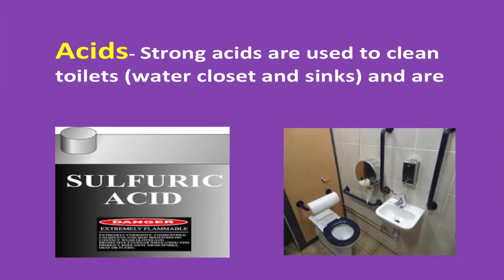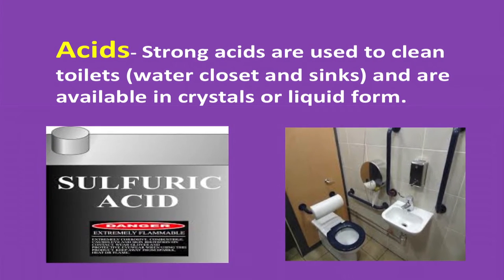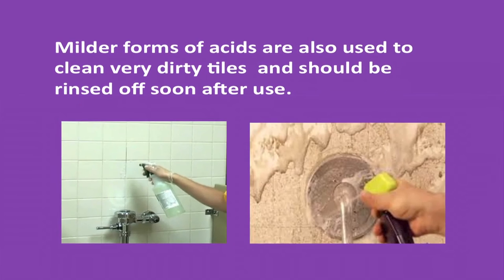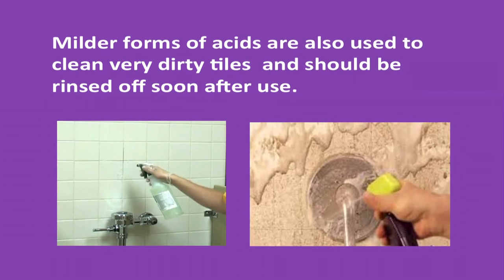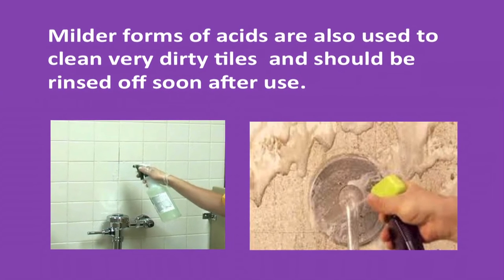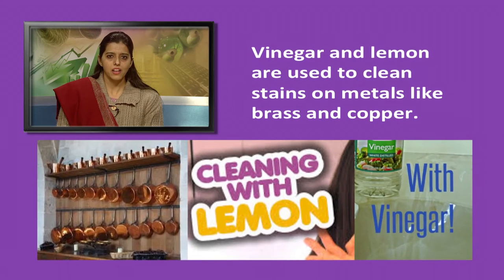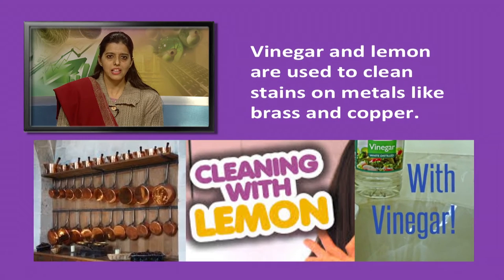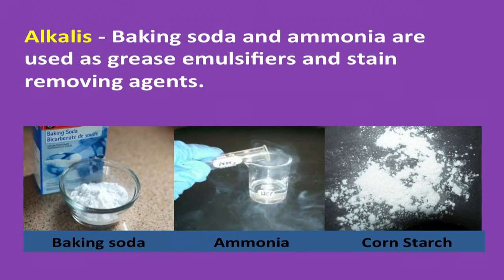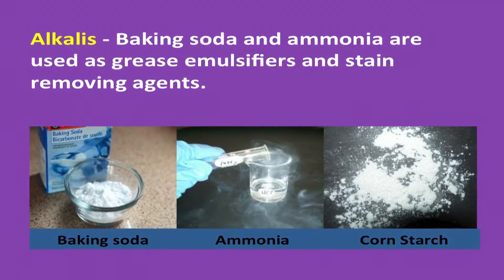Acids — strong ones — are used to clean toilets, water closets, and sinks, and are available in crystal or liquid form. Milder forms of acid are also used to clean very dirty tiles and should be rinsed off as soon as possible after use. Vinegar and lemon are used to clean stains on metals like brass and copper.